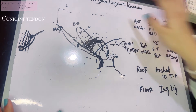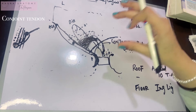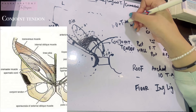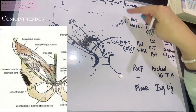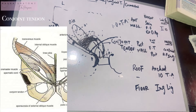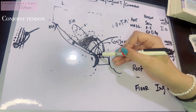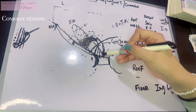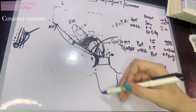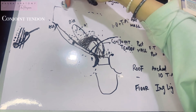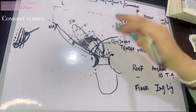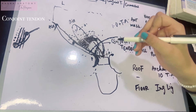The conjoint tendon is formed by the fusion of the aponeurotic fibers of the internal oblique and the transversus abdominis — their lowermost aponeurotic fibers. Medially, the conjoint tendon is attached to the pubic crest. Its major function is to strengthen and close the superficial inguinal ring when intra-abdominal pressure is raised, preventing abdominal organs from protruding through that opening.